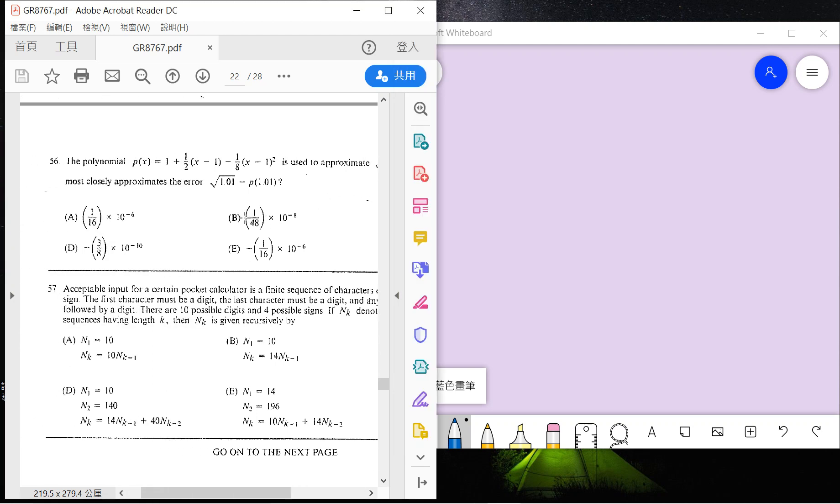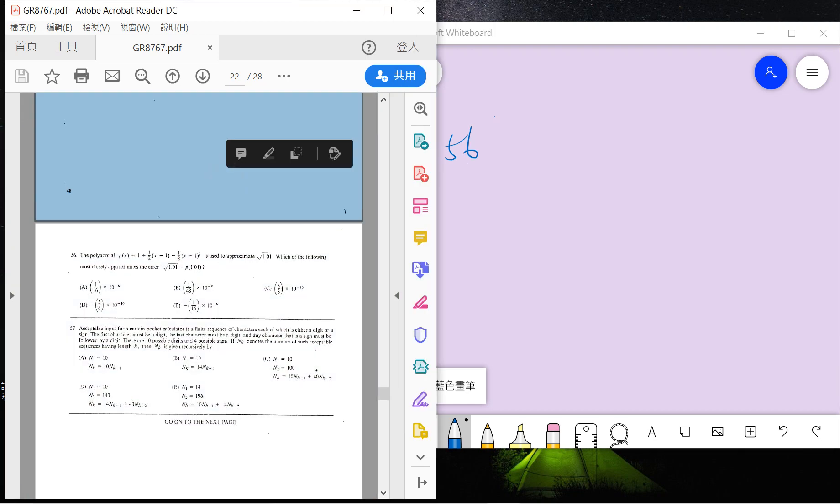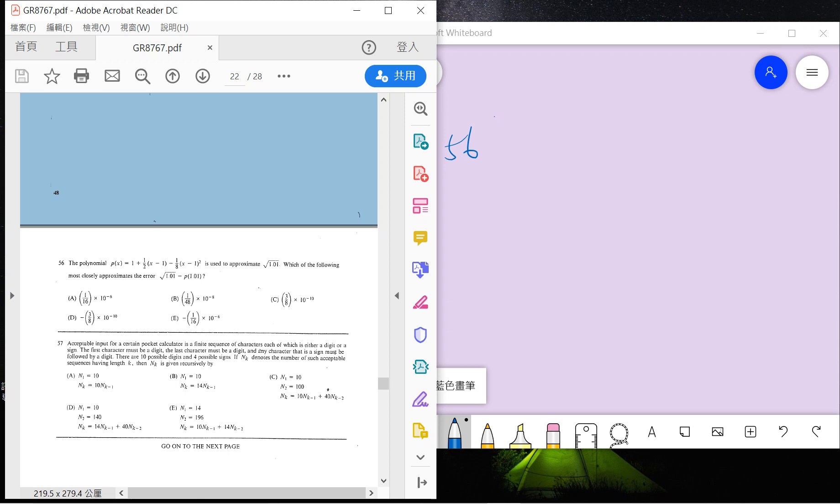Okay, so we are solving GRE math problem 56. The polynomial is P of x equal to... this will approximate 1.01, square root of 1.01, which must be a clear approximation. So basically we'll follow this approach.